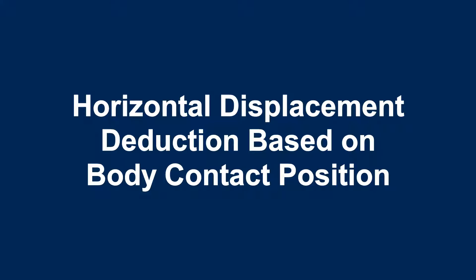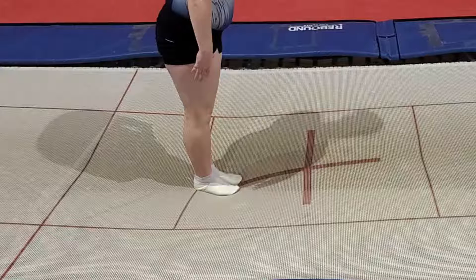When determining the amount of horizontal displacement deduction, the location of the majority of the foot will be important. In this example, only the heels have crossed into the one-tenth deduction area. Because the majority of the foot remains in the zero deduction area, no deduction would be taken.